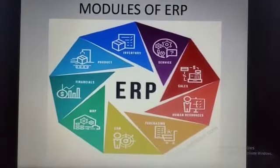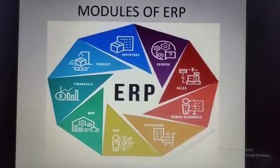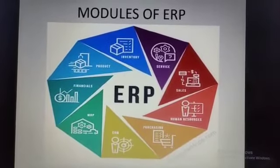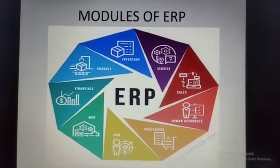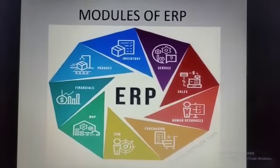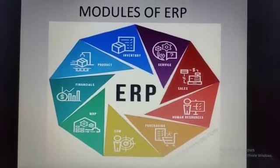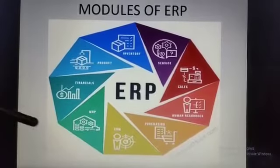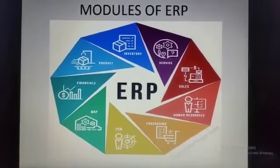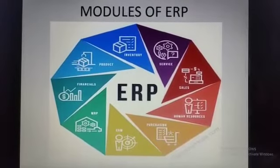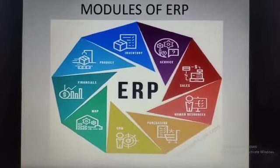First is the Human Resource Module, that is the HR Module. It helps in maintaining employee information — it keeps records of employees like performance reviews, job description, time and attendance, and an employee's designation. Second is the Purchasing Module — it takes care of all the processes to get raw materials which are required in an organization.